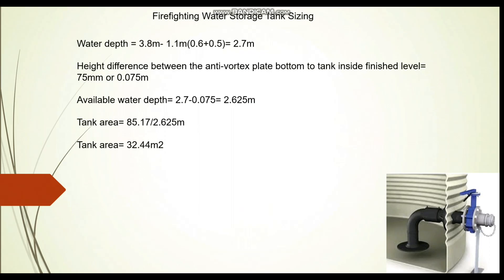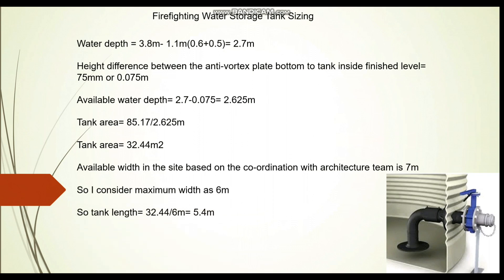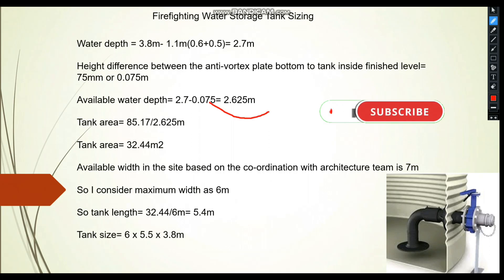To find the length and width, the available width on site — after coordination with the architectural team and allowing clearance for an adjacent electrical room — is limited to 7 m; we use 6 m as the tank width. Dividing 32.45 m² by 6 m gives a tank length of approximately 5.4 m, which we round up to 5.5 m. The final tank dimensions are 6 m × 5.5 m × 3.8 m (total height), with an effective water depth of approximately 2.625 m within that height.